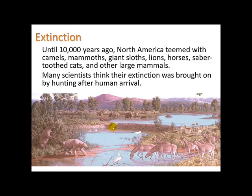Until about 10,000 years ago, North America teemed with camels, mammoths, giant sloths, lions, horses, saber-toothed cats, and other large mammals. Many scientists think their extinction was brought on by hunting after human arrival. You've probably heard of the woolly mammoth — these are no longer existing, possibly hunted to extinction.